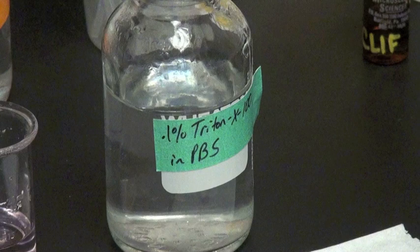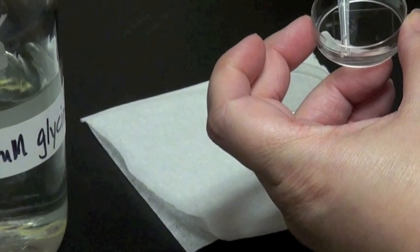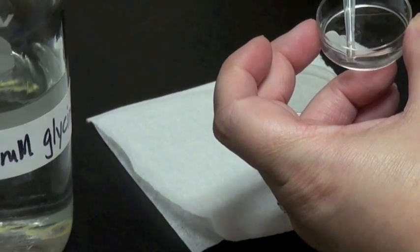These are all great detergents to use, but they all need to be made fresh. So it's not okay to leave a 0.1% Triton X-100 sitting on your bench top for up to a month. After a while you're not going to get very good permeabilization and you're not going to get good staining as a result. I'll remove the 20 millimolar glycine.